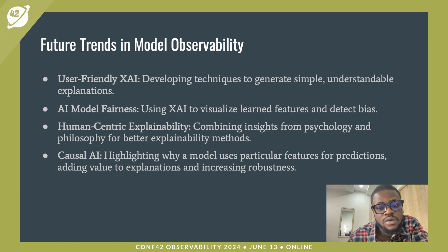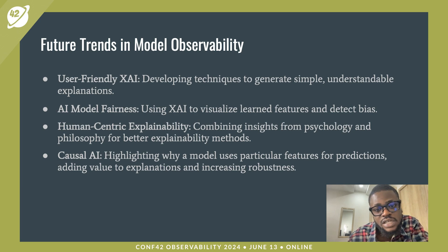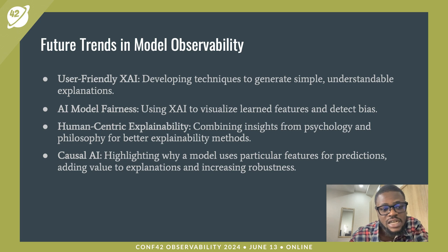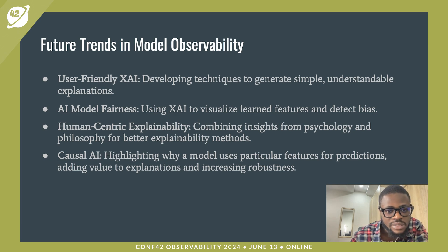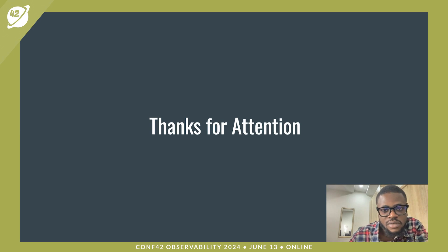Finally, let's talk about future trends in model observability. We have user-friendly XAI — developing techniques to generate simple, understandable explanations. We have AI model fairness — using XAI to visualize linked features and detect bias. We have human-centric explainability — combining insights from psychology and philosophy for better explainability methods. And we have causal AI — highlighting why a model uses particular features for predictions, adding value to explanations and increasing robustness. Thank you so much for having me.